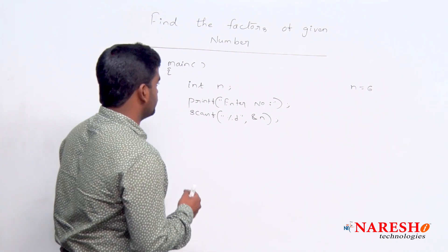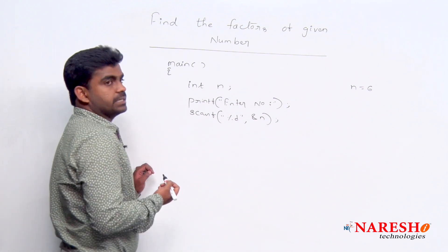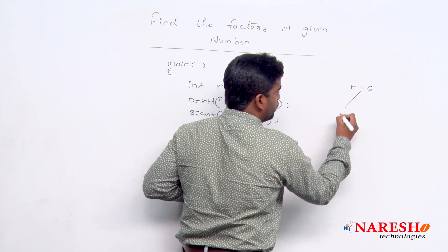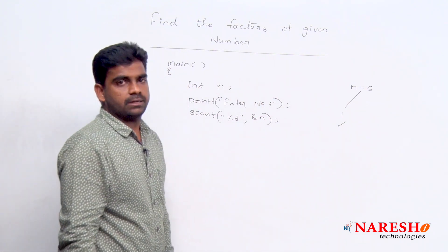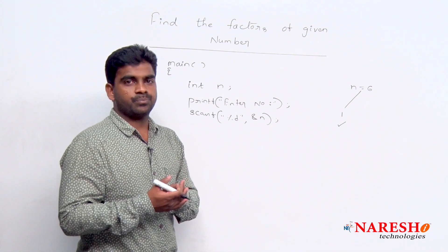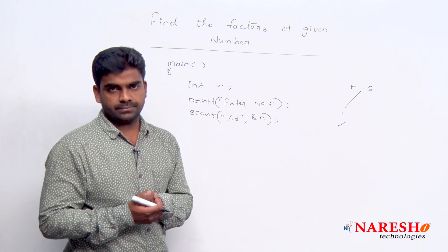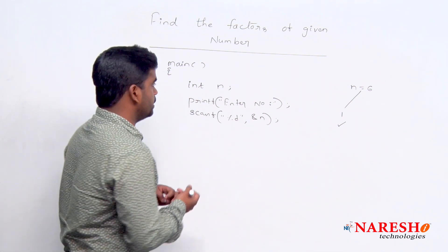For example, factors count we are checking. For this n we are checking that one is a factor or not, yes already one is a factor. For every number, 1 is a factor.